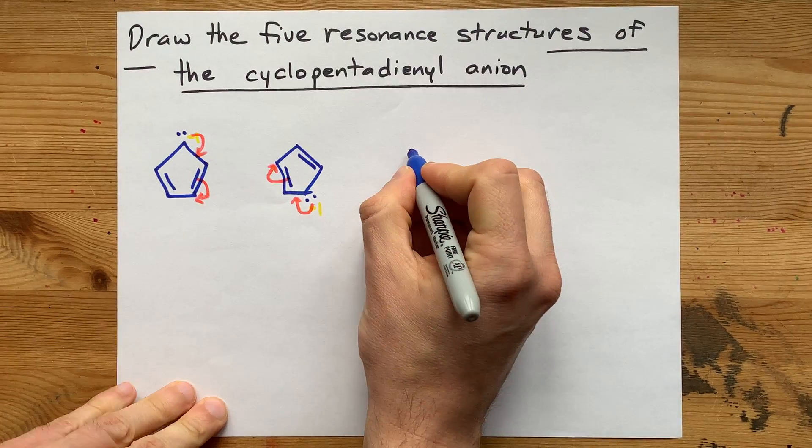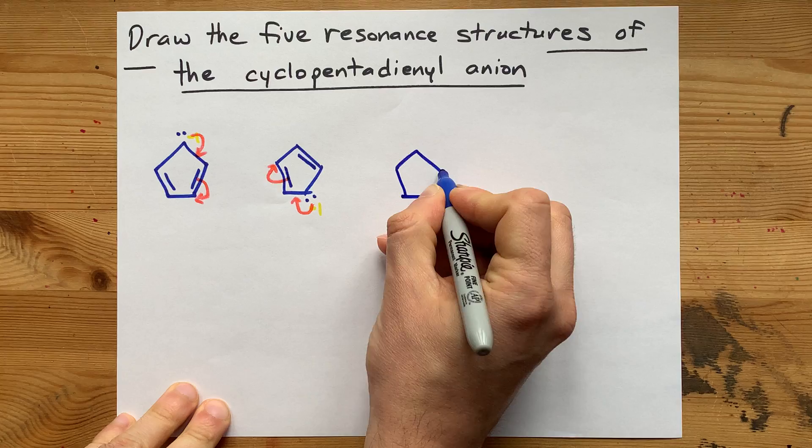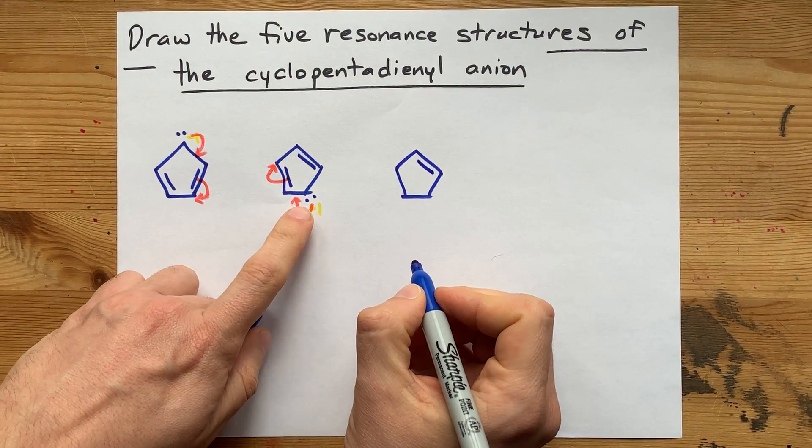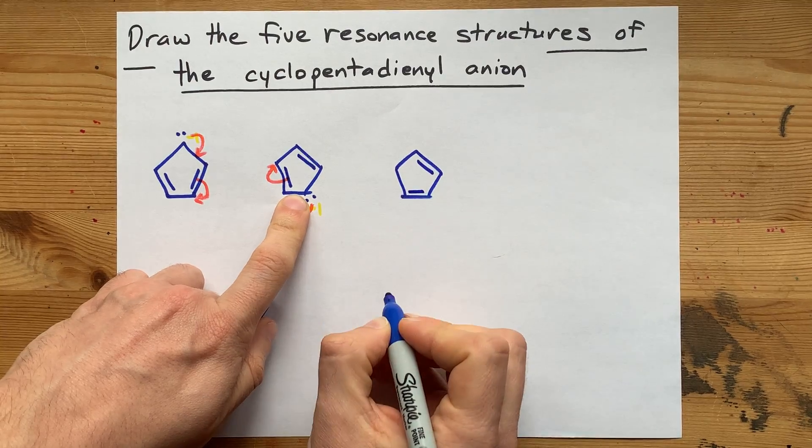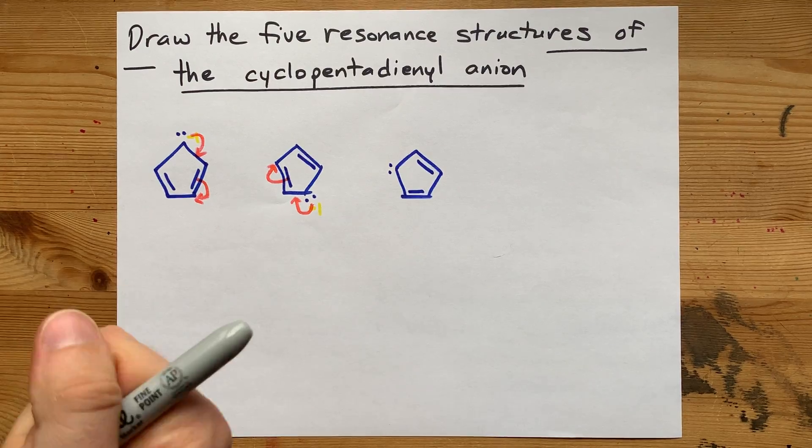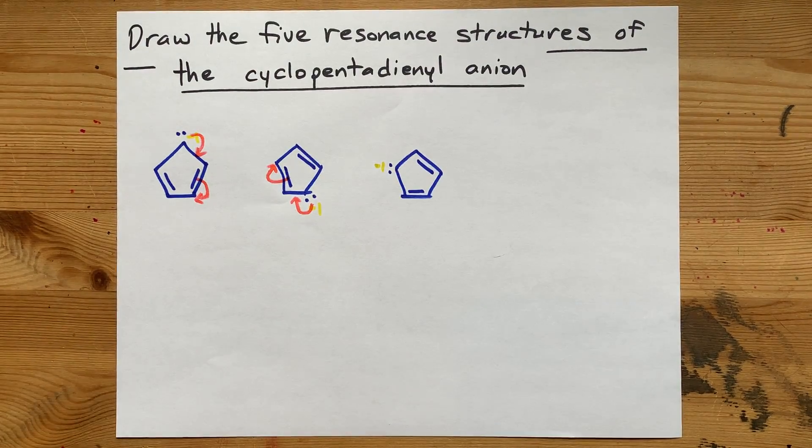That gives you the same pentagon of carbons. This double bond didn't get touched, but we formed a double bond here at the bottom, and we're putting our lone pair of electrons on this carbon atom. Now that one has a minus one charge.